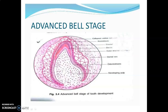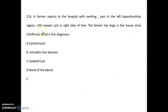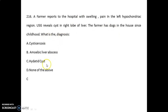A small case-based question: a farmer reports to the hospital with swelling and pain in the left hypochondrial region. When an ultrasound is done, it reveals a cyst in the right lobe of the liver. The farmer has had dogs in the house since childhood. The diagnosis is a hydatid cyst.